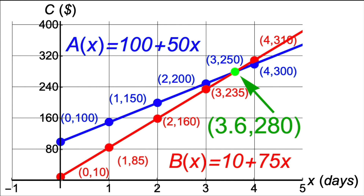The point where the graphs cross — their point of intersection — corresponds to the algebraic solution x = 3.6, where both continuous functions have equal outputs of $280. For the real-life problem, we rounded x = 3.6 up to 4, the first day rental B costs more than rental A. In reality, the true cost functions are step functions — more about that later.